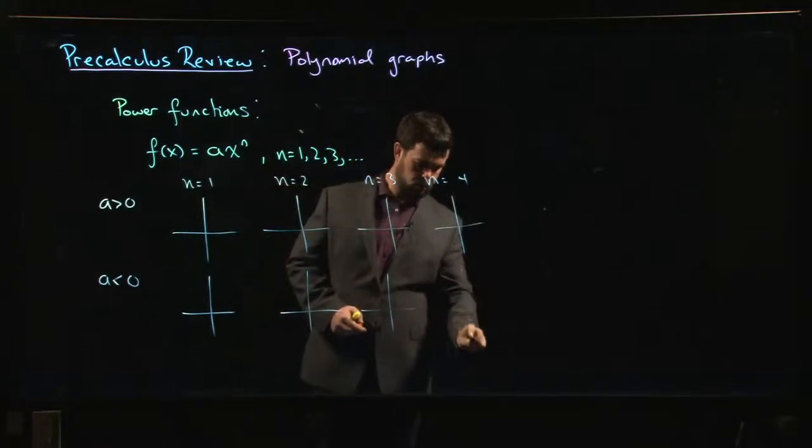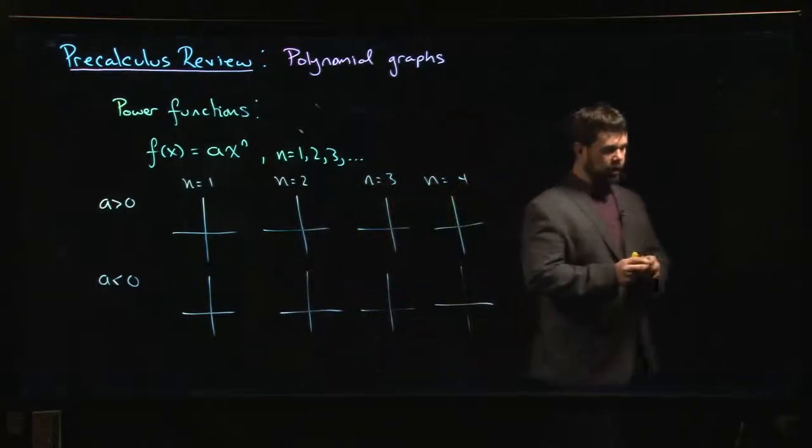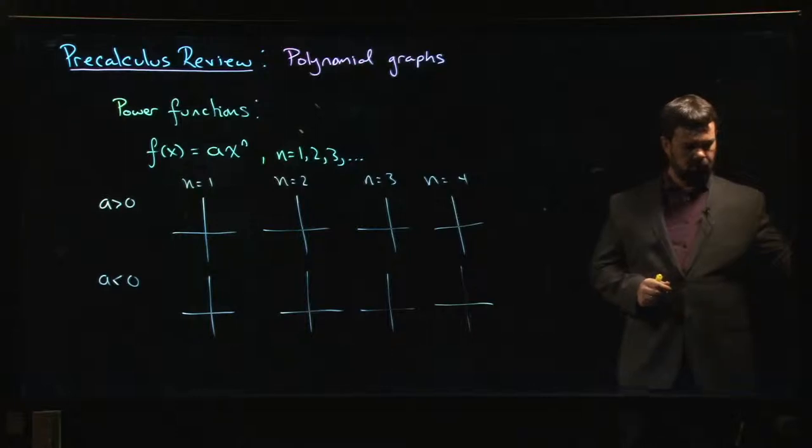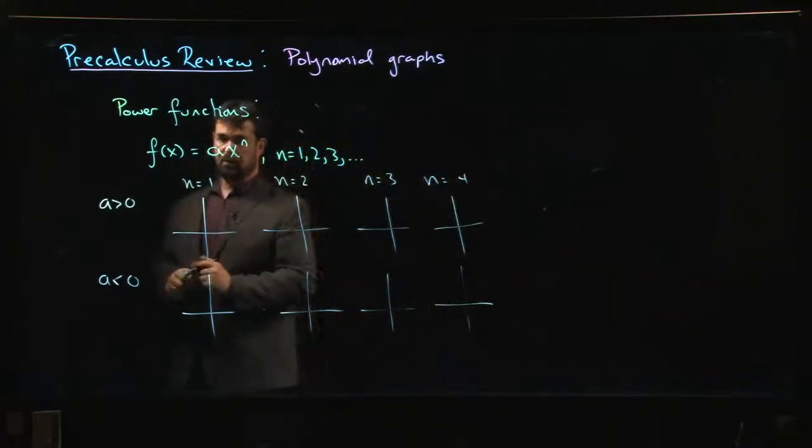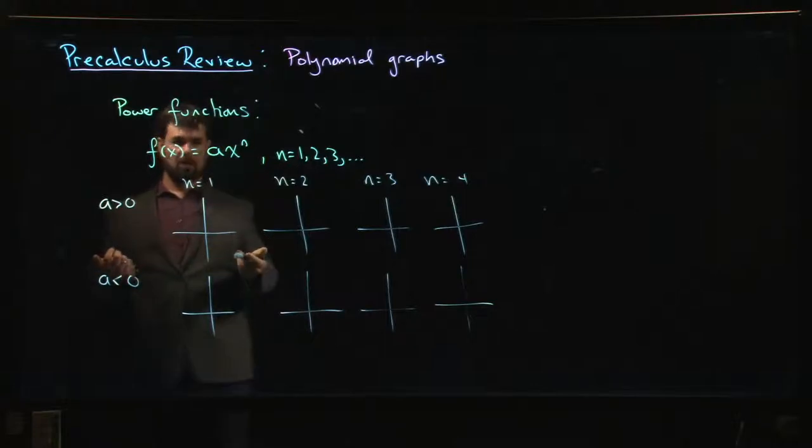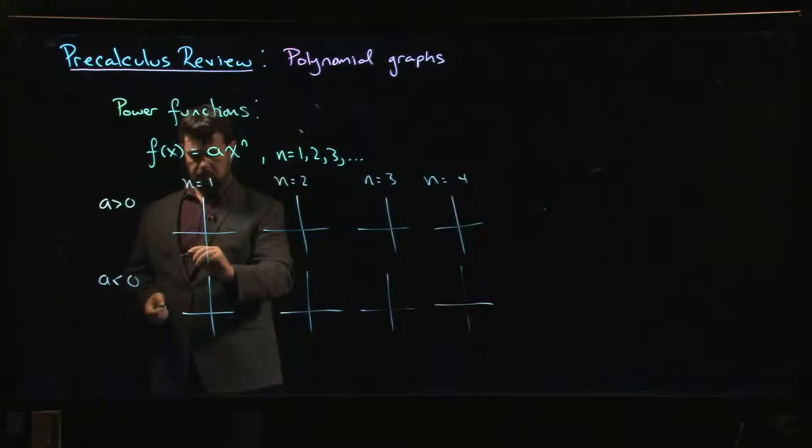All right, now when n equals 1, of course in that case you're just dealing with a linear function, x to the one. We get a straight line with slope a, intercept zero, so it passes through the origin. If a is positive, positive slope, so we have something like that.